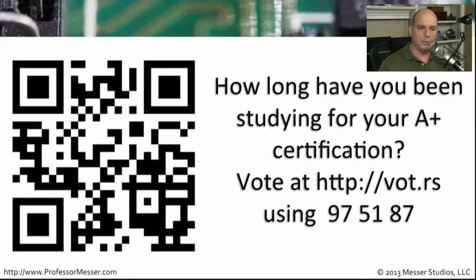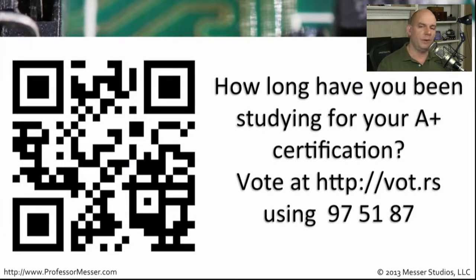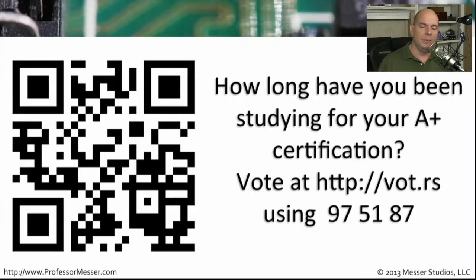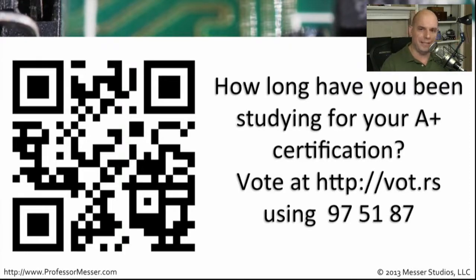For those of you that have been on my study groups before, you know I like to ask questions and have you vote. So grab your mobile device, pop open a new window, and go to VOT.RS. The first question I want to ask is: how long have you been studying for your A-plus certification? Go to VOT.RS and use code 975187 — it will take you right to the question. If you have a QR code reader, you can pop it on the screen as well.